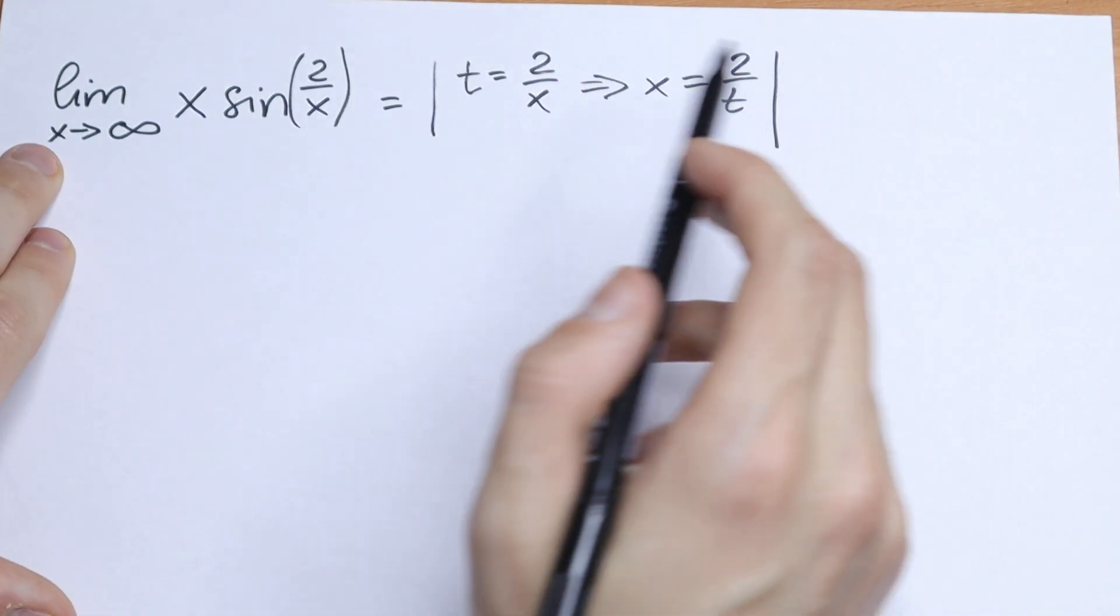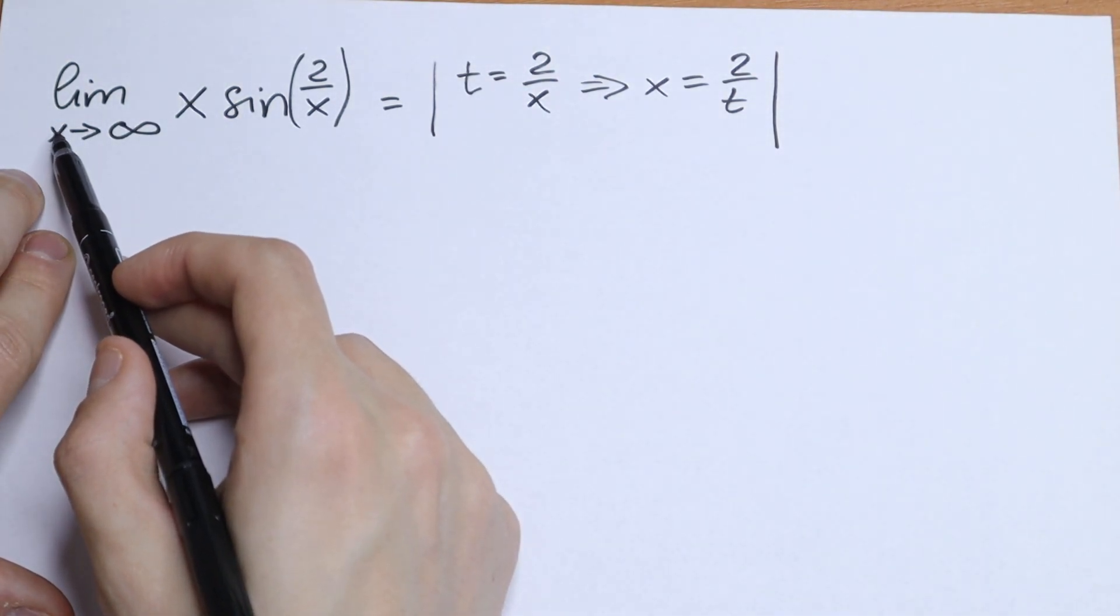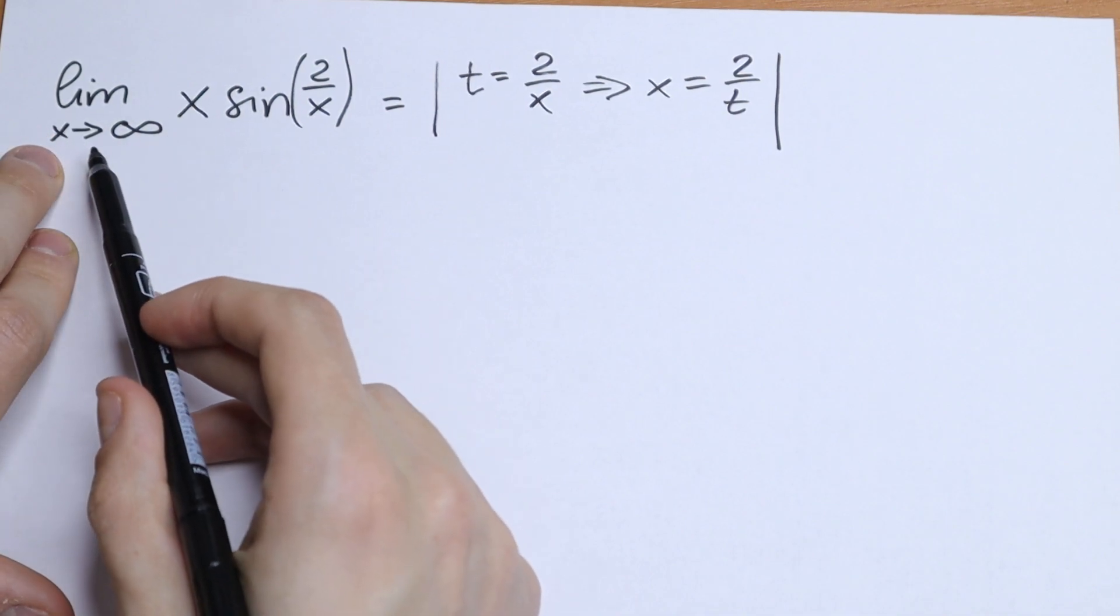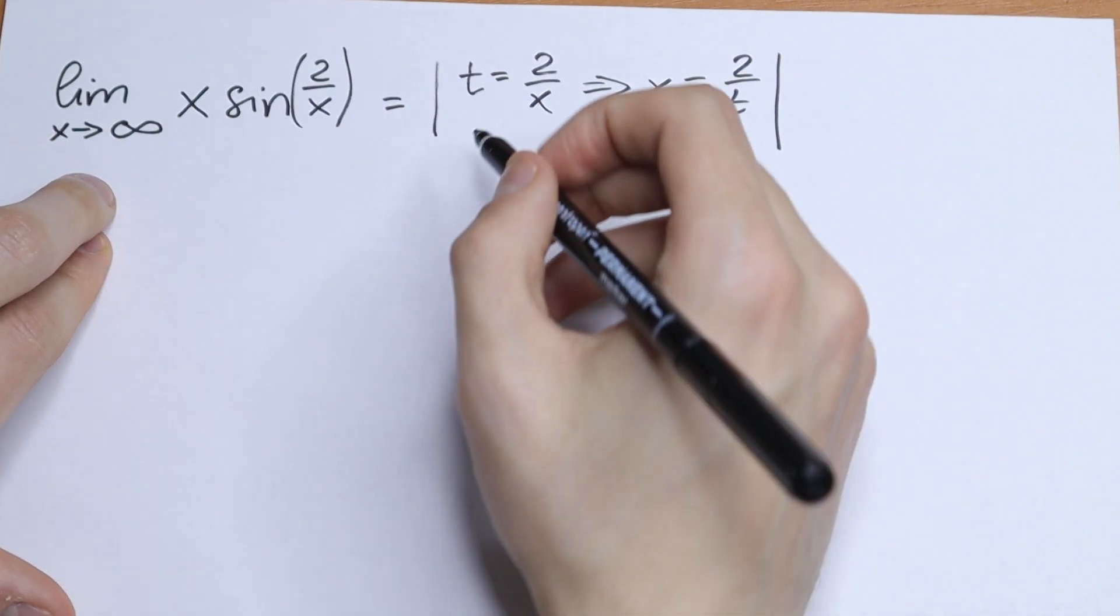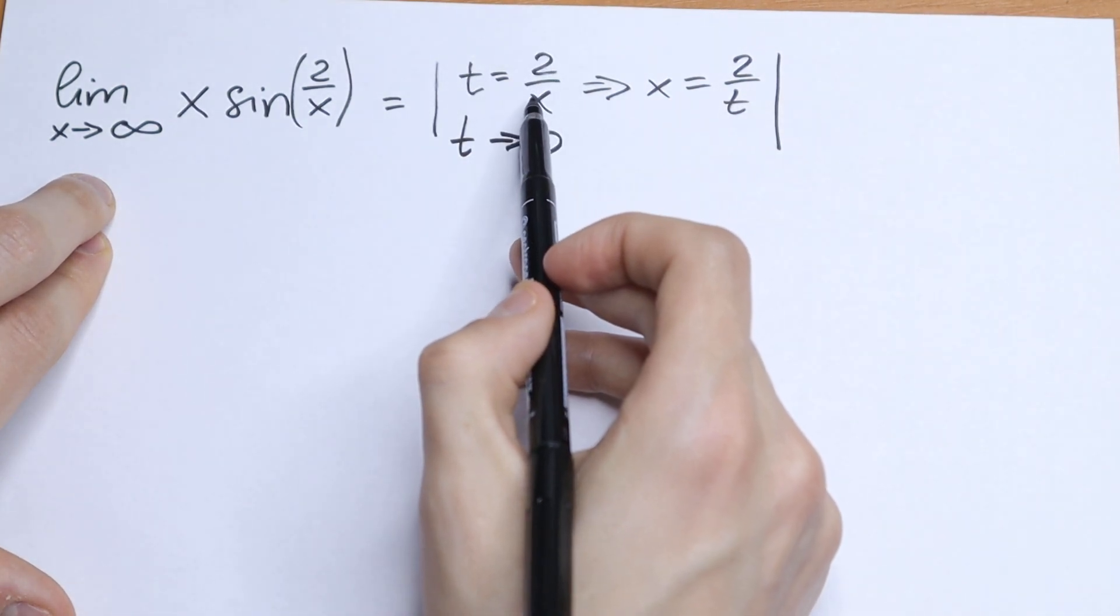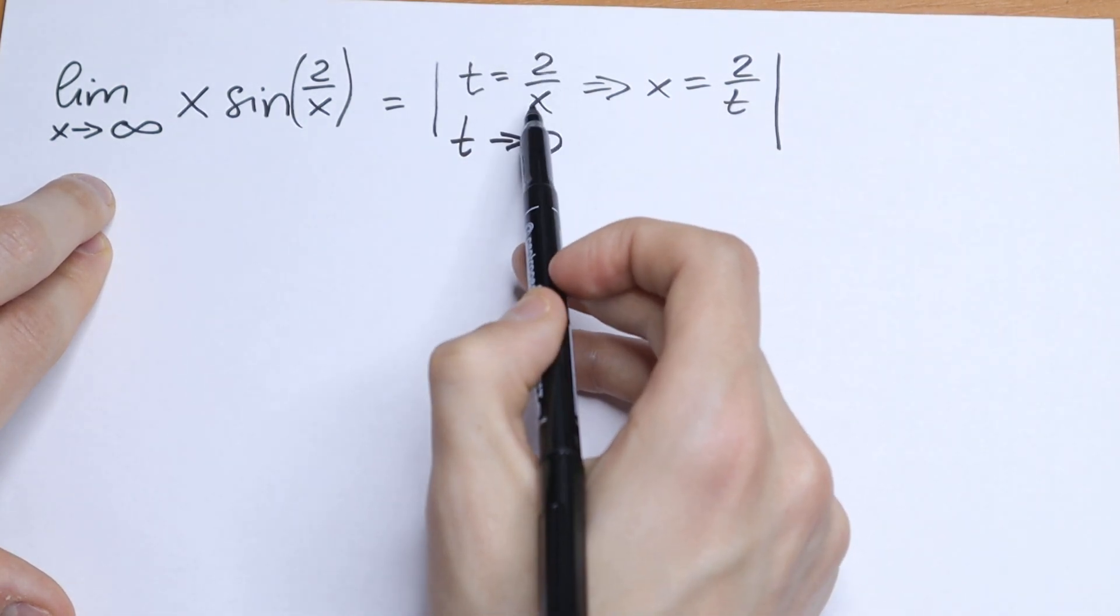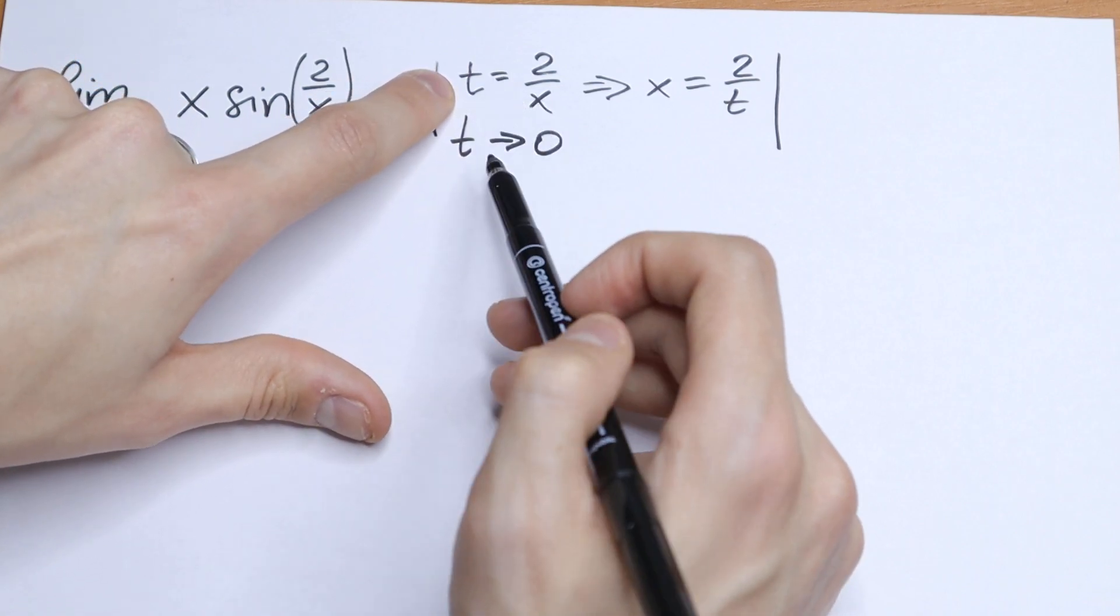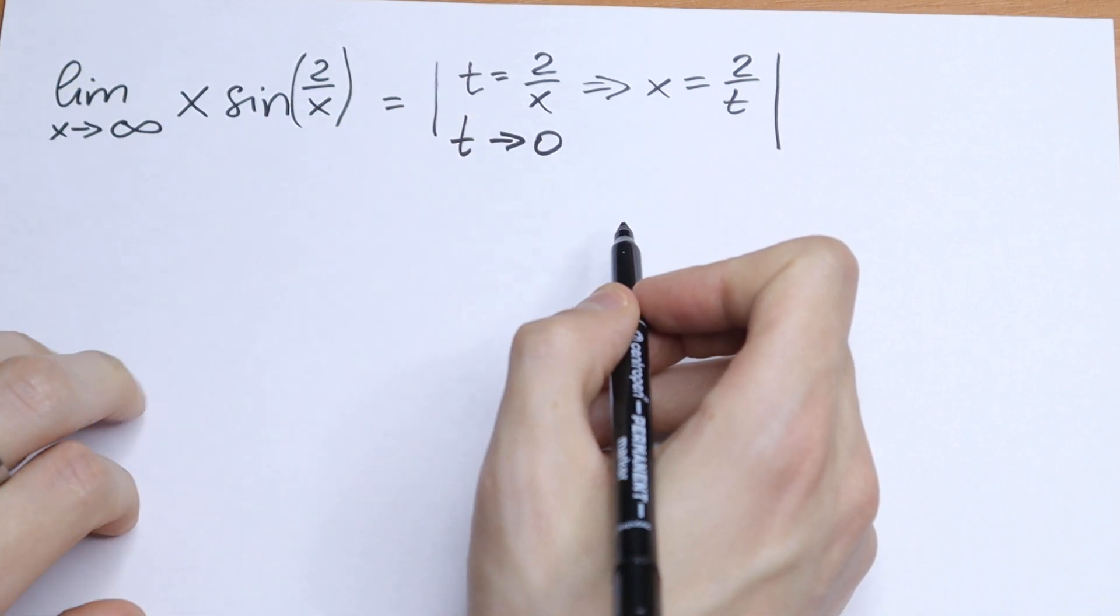Moreover we need to change x by t right here. So if x approaches to infinity then our t approaches to 0. From here if x goes to infinity we will have 2 over infinity and this will be equal to 0. So t approaches to 0.